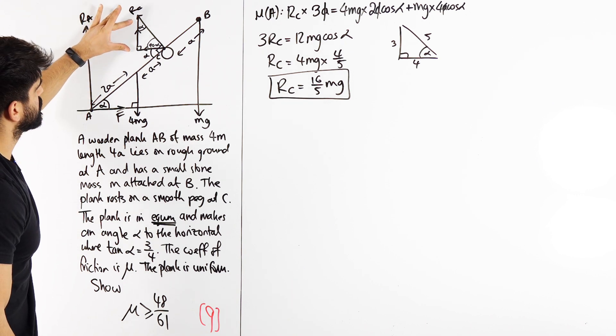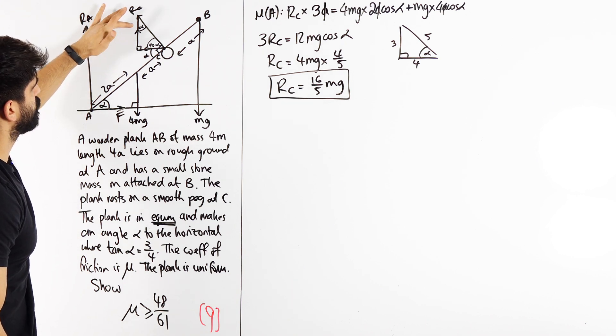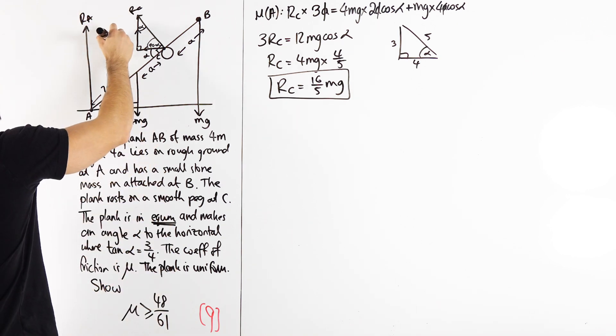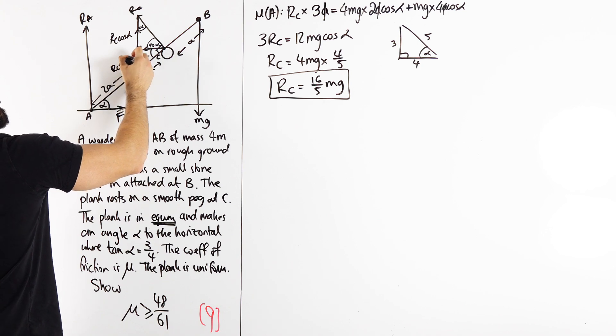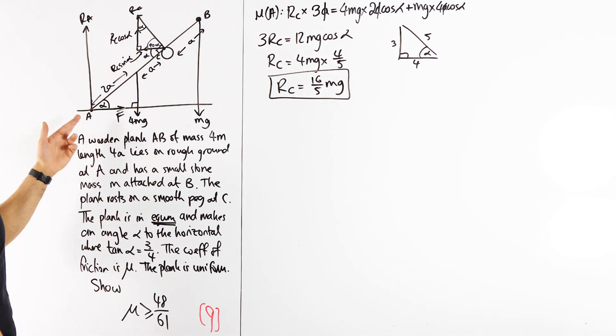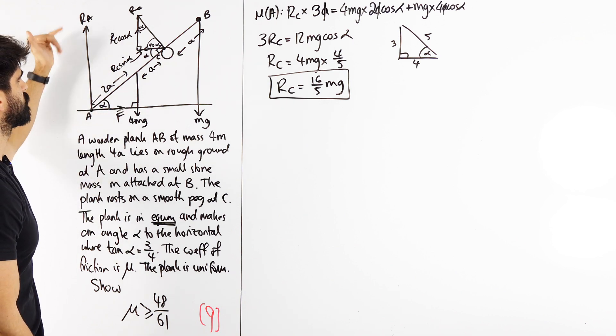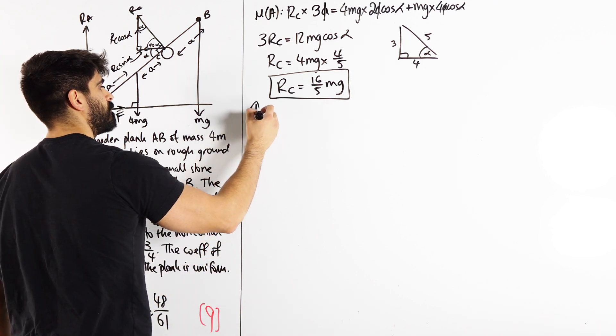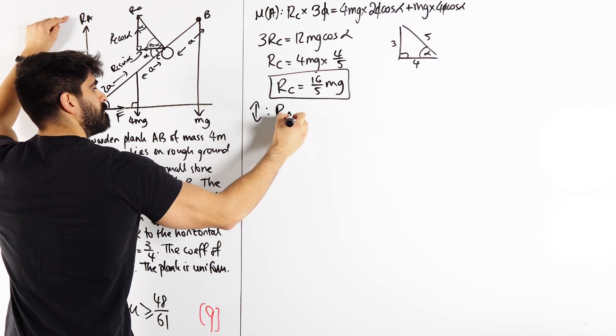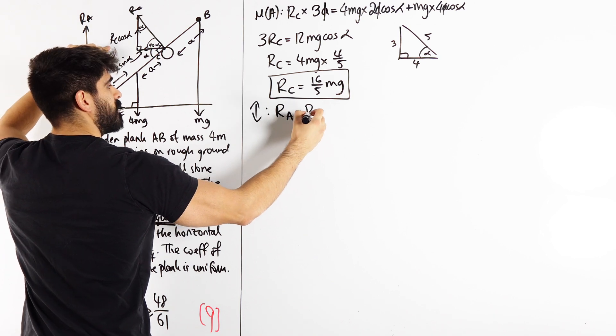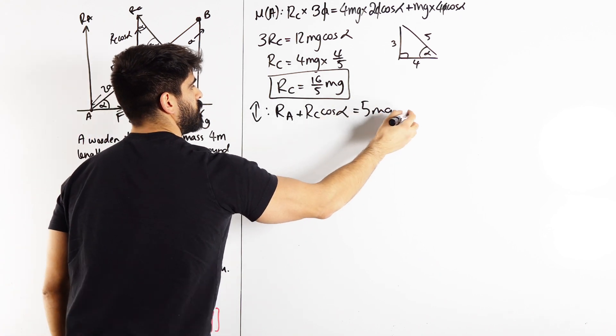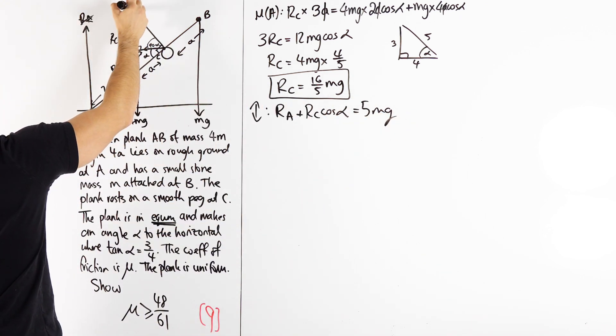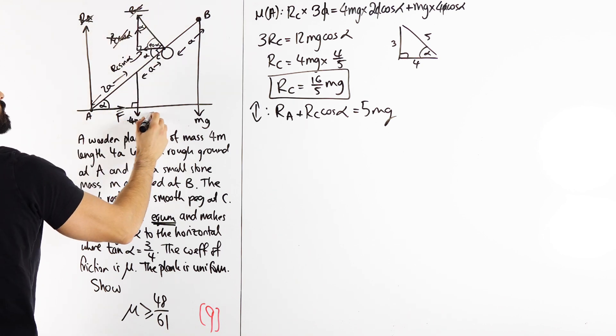Now left and right is the easier one to write down because there's less going on, but F depends on RA so let's do up, down first. RA and RC cos alpha equals 5MG, the downward forces. Let's tick everything off as we use them.